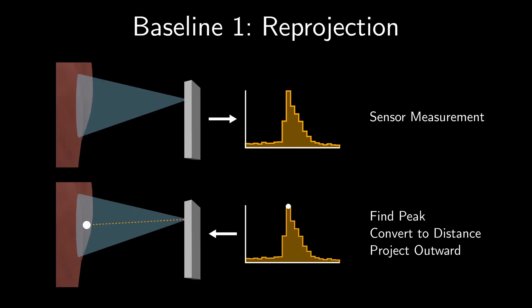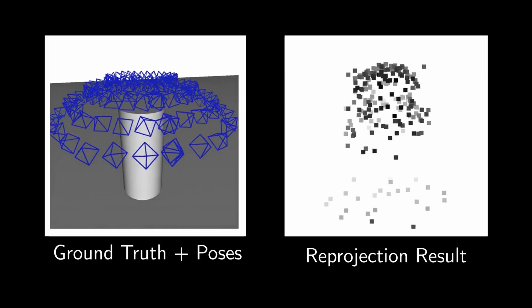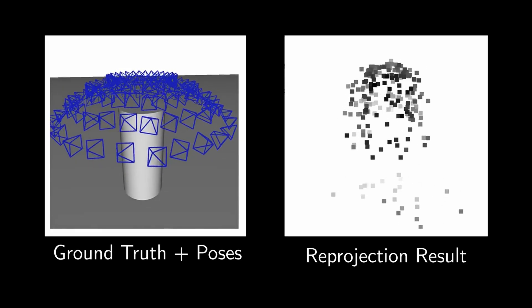First, let's look at how the baseline methods fare on this task. The first baseline is reprojection. We find the peak of the histogram, convert it to a distance, and project outwards from the sensor. If we do this for all measurements, the result resembles a cylinder, but the reconstruction is sparse and the details are not clear.